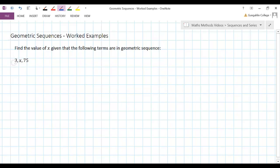What do we know? We know the first term. We know that a is equal to 3. We don't know what the common ratio is. We do know what, well we kind of know what the second term is.